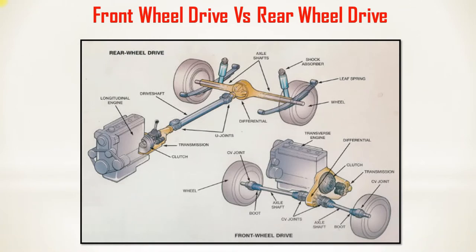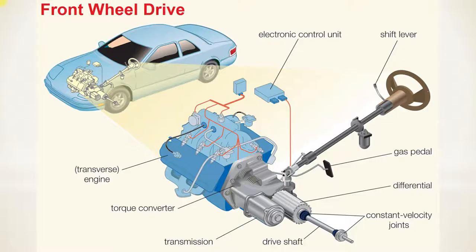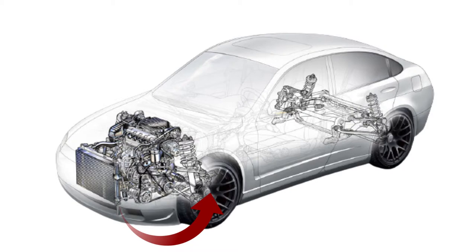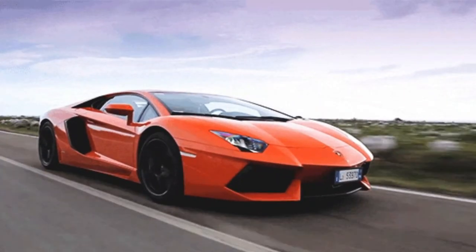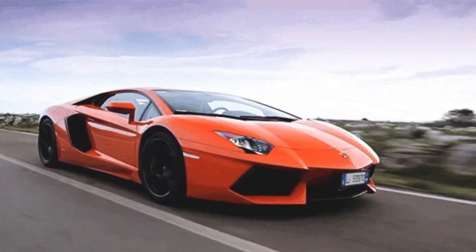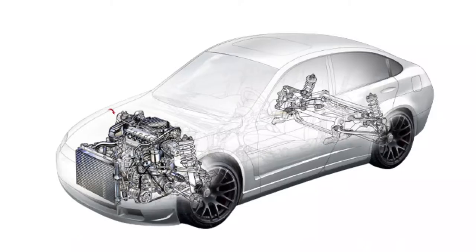First we will discuss front engine front wheel drive. In this type of chassis layout, the engine is fitted at the front and drive is also given to the front wheels, meaning no propeller shaft is used. The differential is included in the same assembly. The front axle is a live axle and the rear axle is a dead axle. Live axle means power is directly transmitted to that axle. Due to all assemblies — clutch, gearbox, and engine — being at the front side, it makes it very difficult to accommodate the steering mechanism.